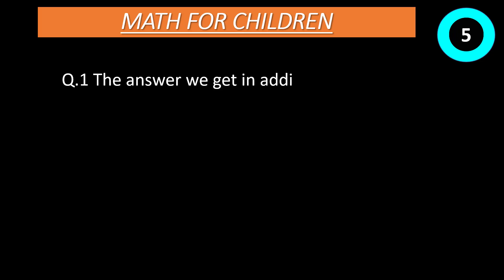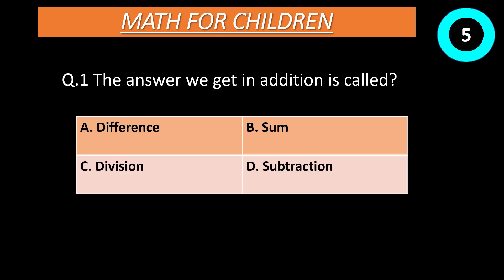Question number 1: The answer we get in addition is called? Option A: Difference. Option B: Sum. Option C: Division. Option D: Subtraction. Time start now. Correct answer is B, Sum.